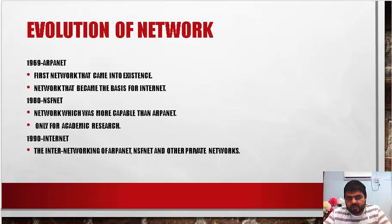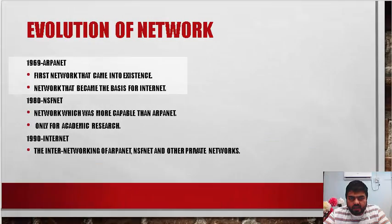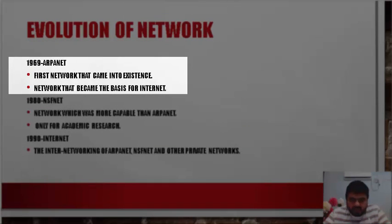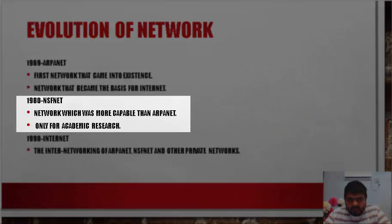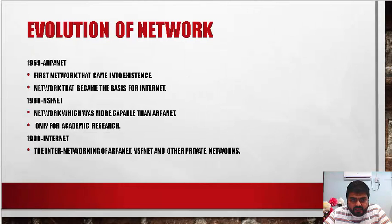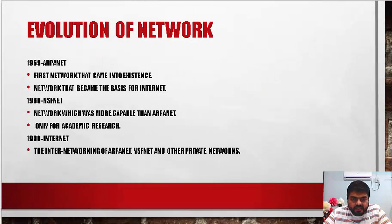Now, evolution of network. Before studying any subject, we need to understand what changes took place in history. In 1969, ARPANET was developed — that was the first network that came into existence, and it became the basis for the internet we use today. Later on in 1980, NSFNET was developed, which was more capable than ARPANET and was used only for academic research purposes. In 1990, the internet became popular. Internet is nothing but the networking of ARPANET, NSFNET, and other private networks.